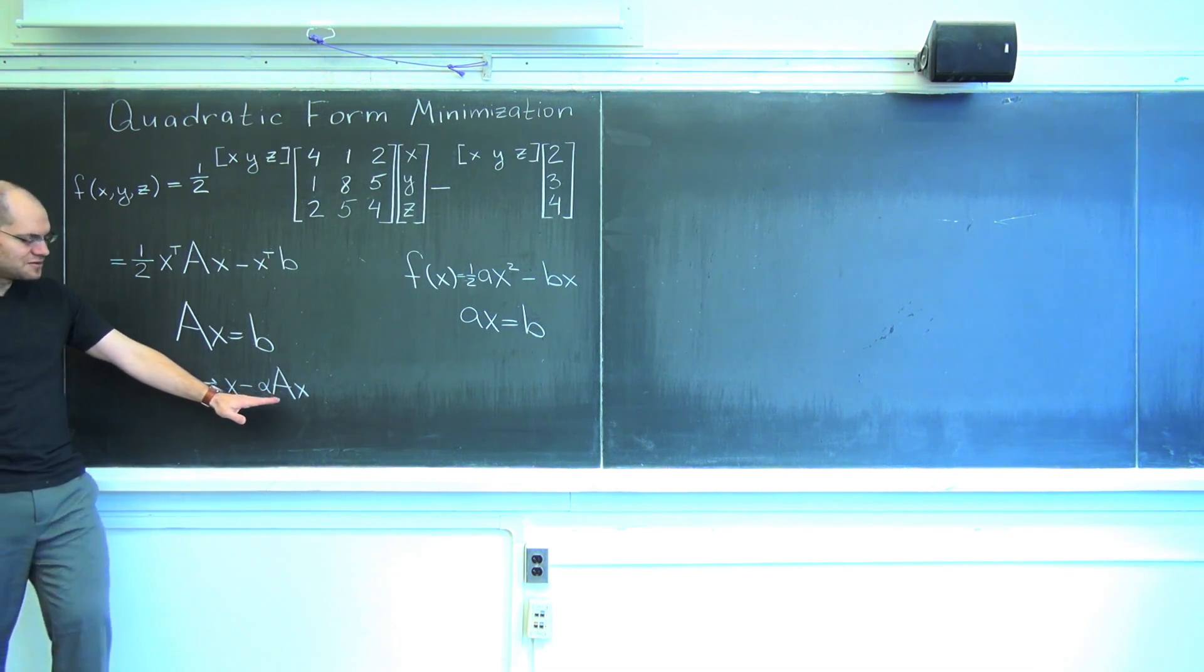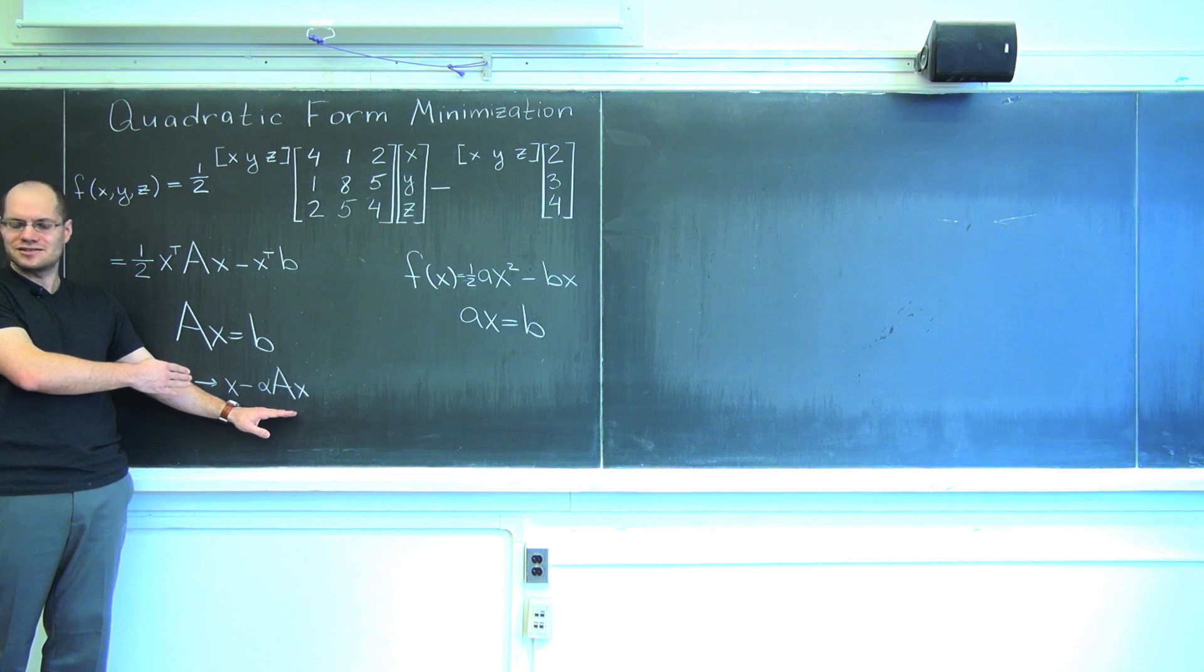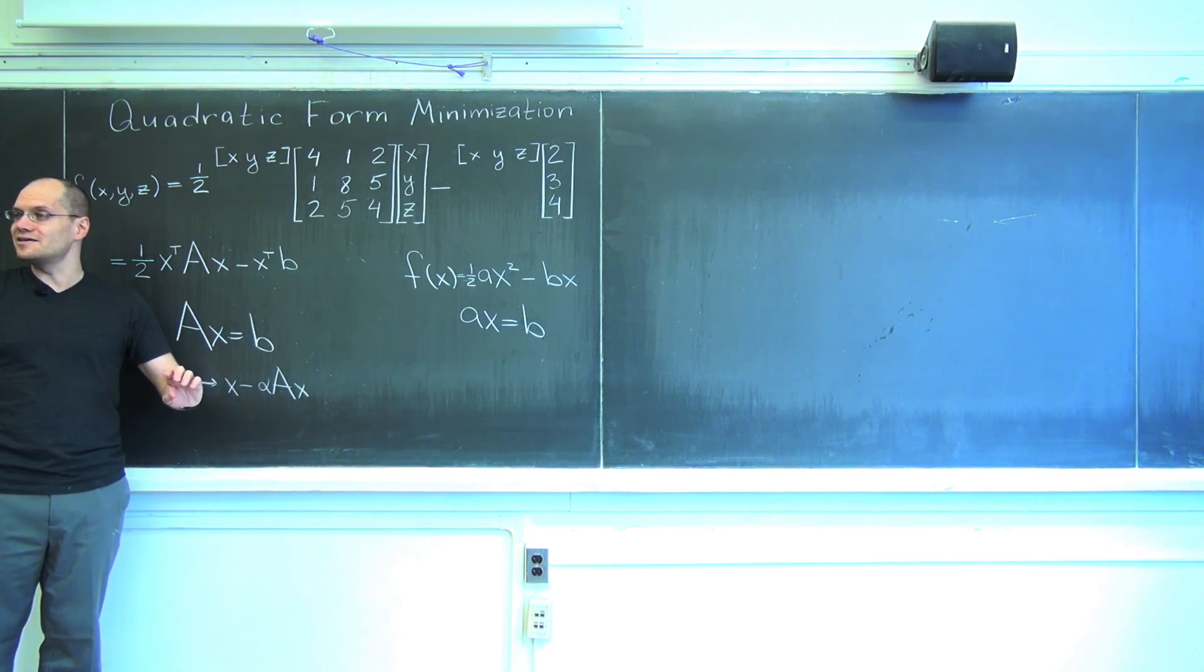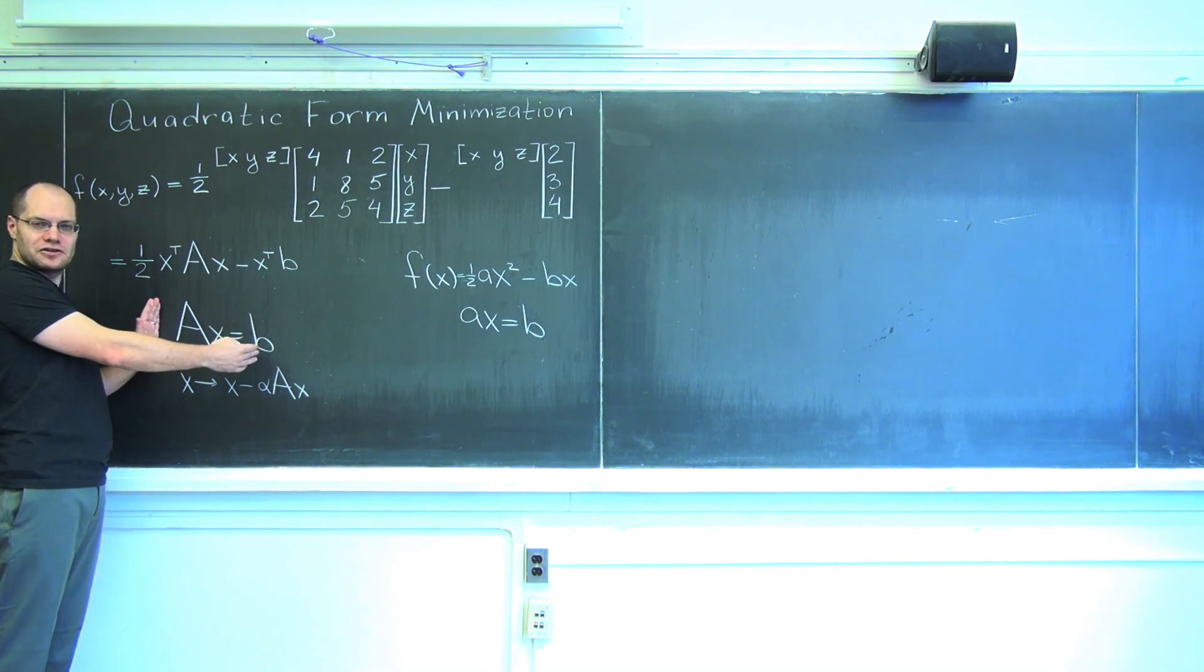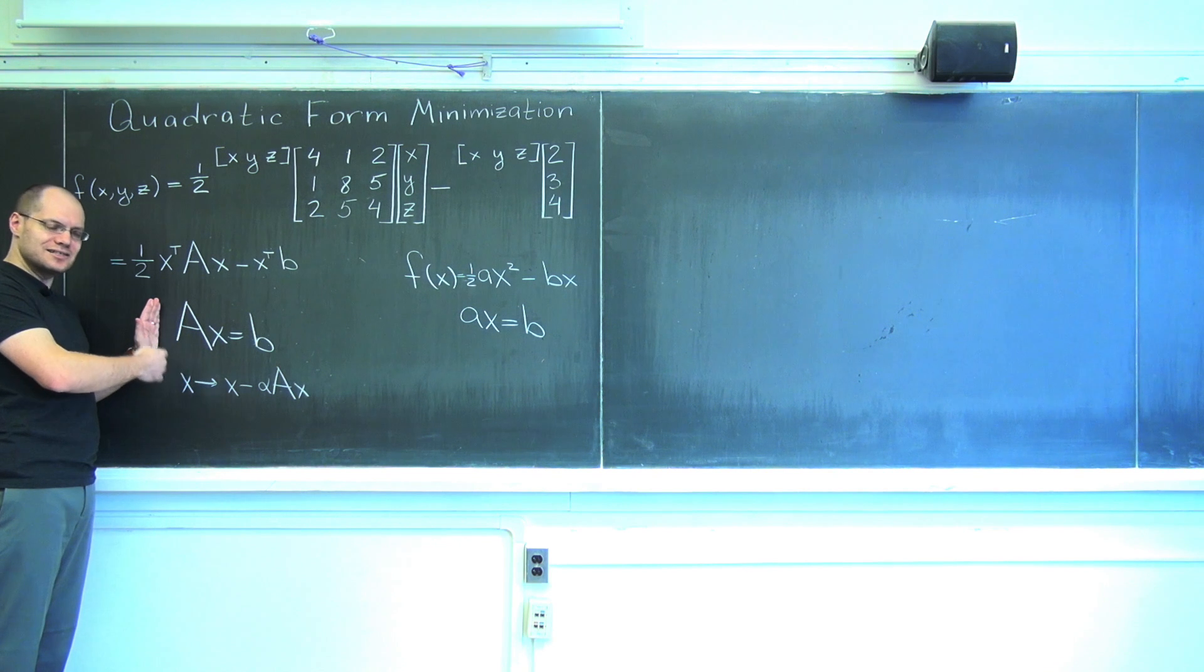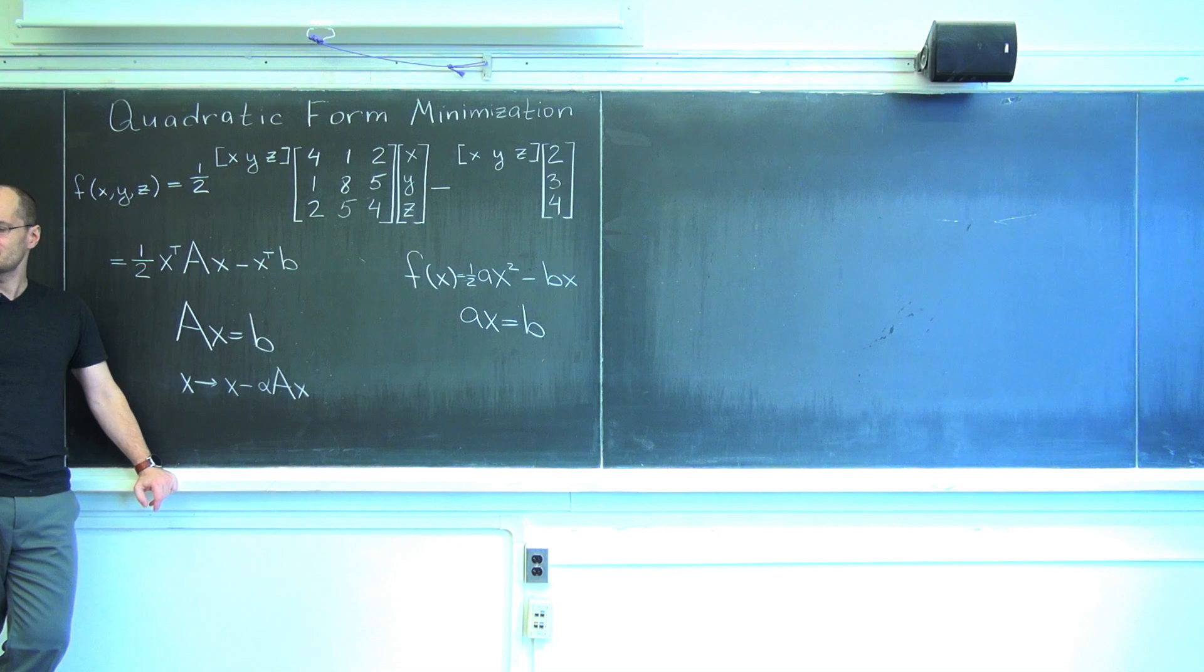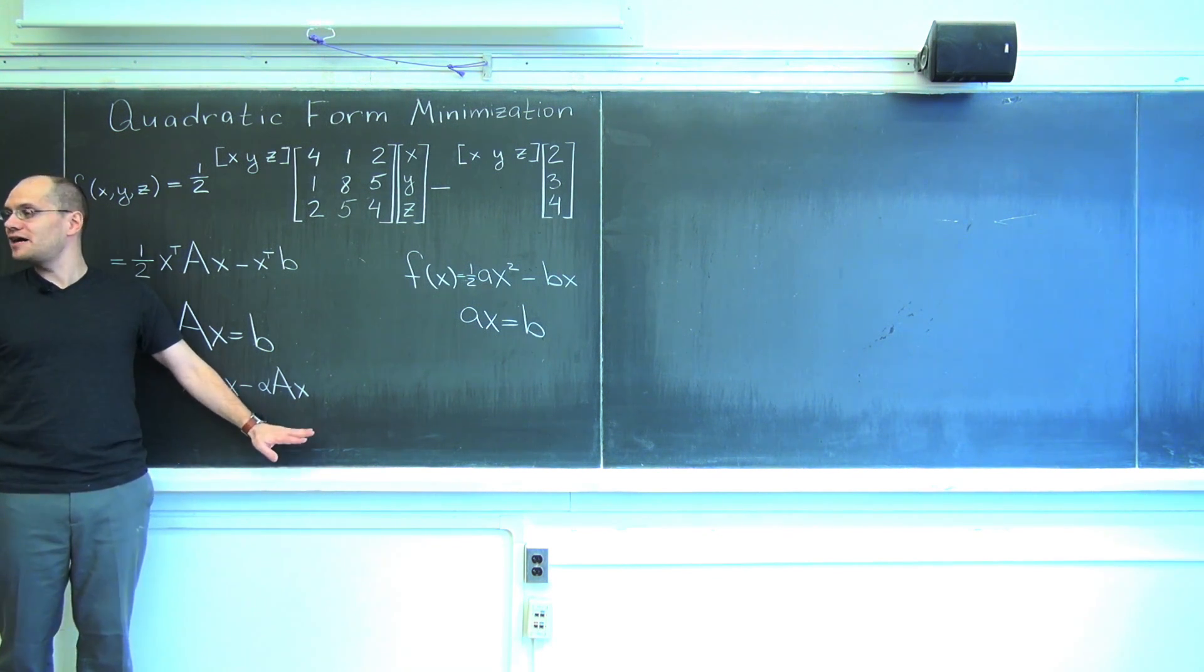This most naive approach, which takes half a second to program, will give you your answer approximately at least, much more quickly than Gaussian elimination. This is called an iterative method. In its less naive form, it's called conjugate gradients. But even this naive approach will get you your approximate answer instantly, relatively speaking. Having an optimization perspective on a problem you think you know well always is an additional benefit, sometimes tremendous additional benefit. That's all I have to say about quadratic form minimization.